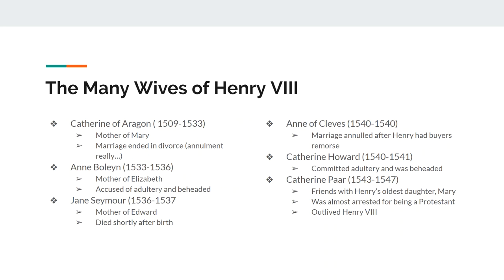Henry VIII has a couple of wives. His first wife is Catherine of Aragon, and he is going to be married to her from 1509 to 1533. Henry had an older brother, and that brother dies before he can become king. Catherine of Aragon was actually supposed to be the wife of Henry's older brother — in fact, they were married. However, they never consummated the marriage. So when Henry's older brother dies, Catherine is then going to be married to Henry in an attempt to keep peace between Spain and England. Catherine and Henry have a girl named Mary.